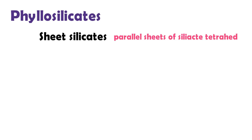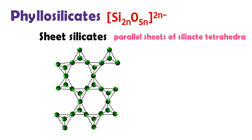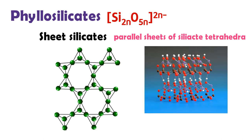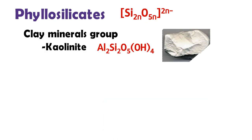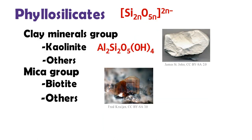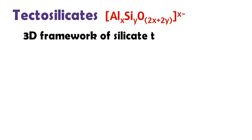Phyllosilicates form parallel sheets of silicate tetrahedra with Si₂O₅. All phyllosilicate minerals are hydrated with either water or hydroxyl groups attached. As phyllosilicates, the serpentine subgroup includes antigorite, chrysotile, and lizardite. Other phyllosilicate minerals include the clay minerals group, mica group, and chlorite group.